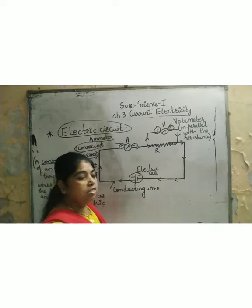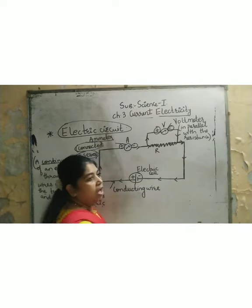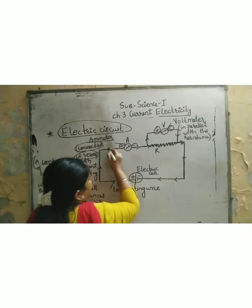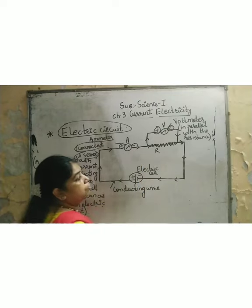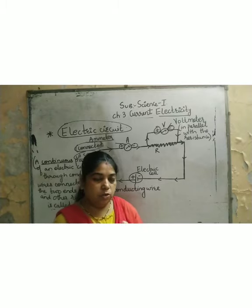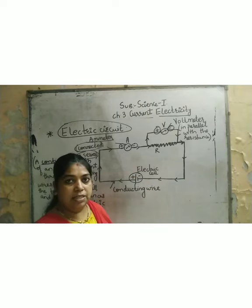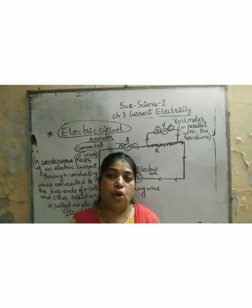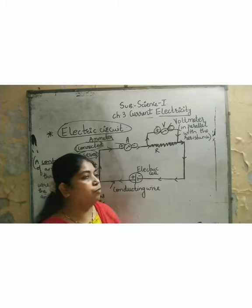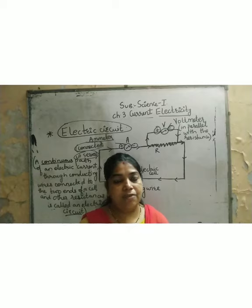One thing you have to remember, dear students: the positive and negative charges and the direction of the arrows. Always make sure the arrows move from the positive terminal. If you mark the arrows in the opposite direction, your circuit is wrong — considered totally wrong. So whenever you are drawing your circuit diagram, make sure from which terminal you are taking your charge and passing your arrows.